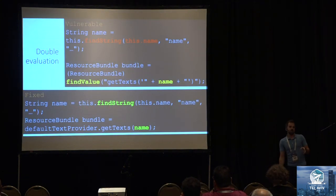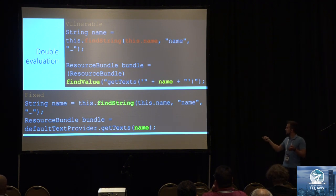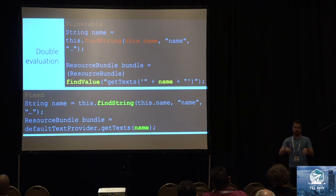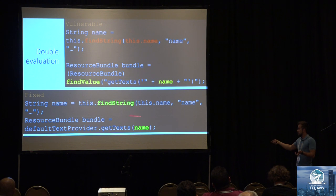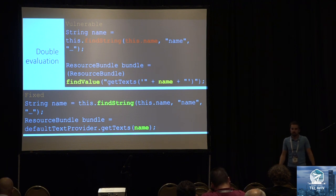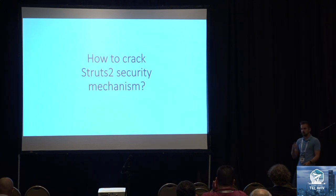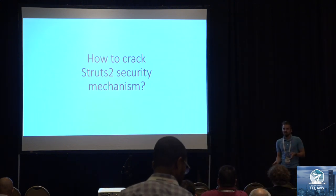Double evaluation is a bit harder but works the same way. First it evaluates the user input — the name — for the first time; then it takes that variable and evaluates it a second time, and this time you can do mischief. It was fixed by removing the second evaluation. This is an example of another Struts vulnerability — not as popular as the Equifax one, but with pretty much the same consequences. After you know how injection points look, let's go to the security bypasses — the most fun part of this talk.